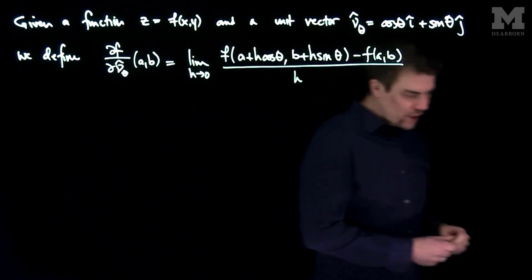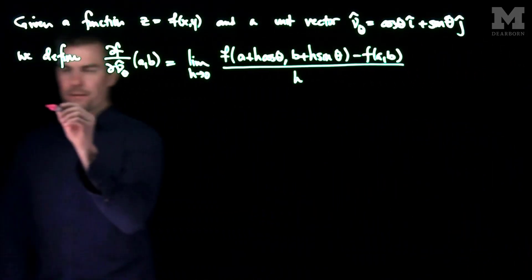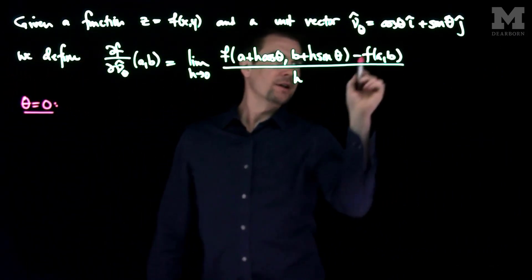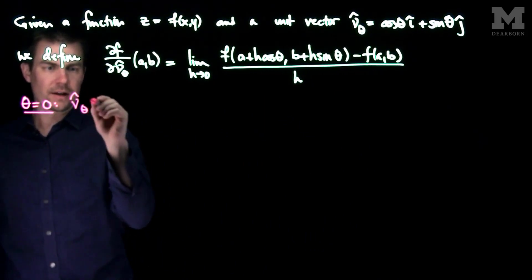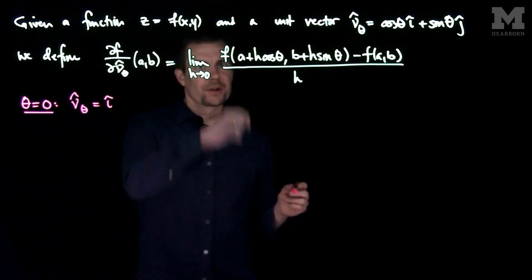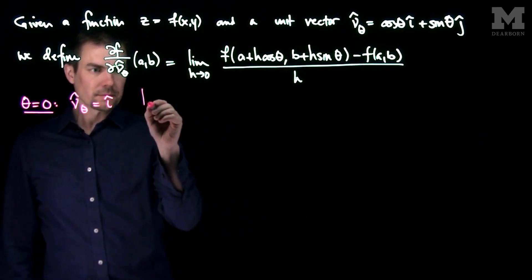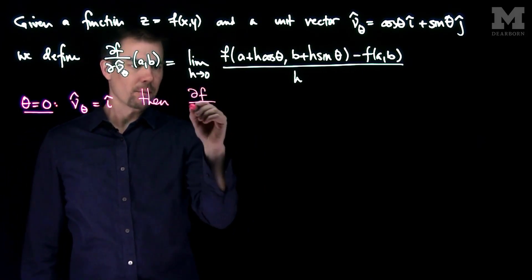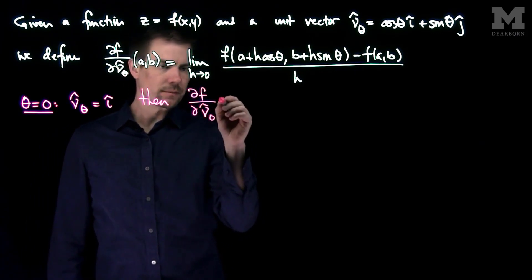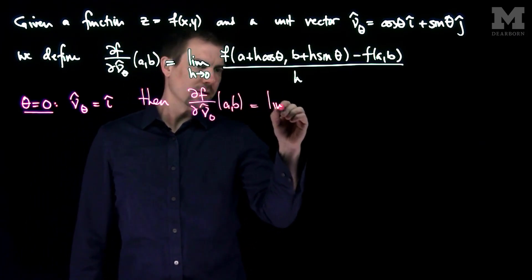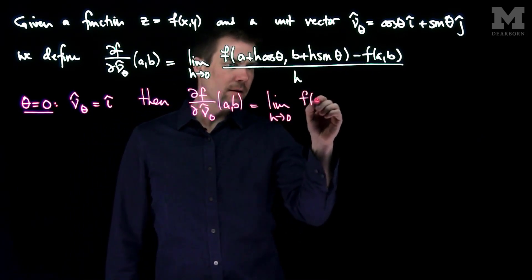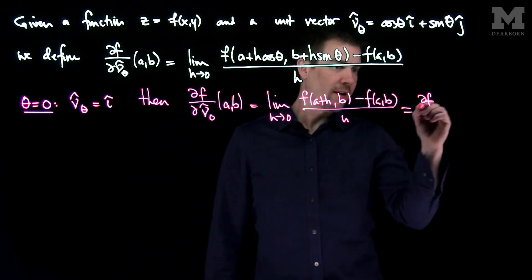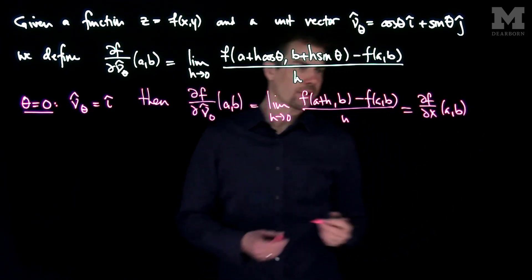And so one important thing to note is that this generalizes partial derivatives. So for example, if theta was equal to zero, then this nu hat of theta is going to turn into i hat. And what this formula will turn into is, this directional derivative partial f partial nu with zero as your angle at a point ab is the limit as h goes to zero of f of a plus h, b minus f of ab over h, which is exactly equal to partial f partial x at a point ab. So when theta is equal to zero, you get the x partial derivative.